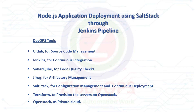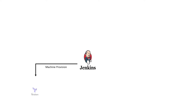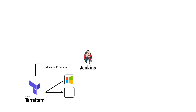Let's explore the workflow of Node.js application deployment stage by stage. In the first stage, we will provision three virtual machines in OpenStack — CentOS, Ubuntu, and Windows — using Terraform. A Jenkins job is written to pull the Terraform code from GitLab and execute it in OpenStack to provision three virtual machines.